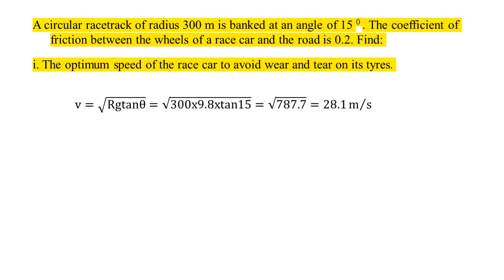The optimum speed formula is V = √(Rg tan θ). The values are: R = 300 m, g = 9.8 m/s², θ = 15°.